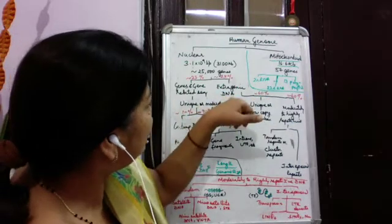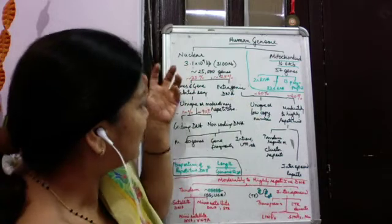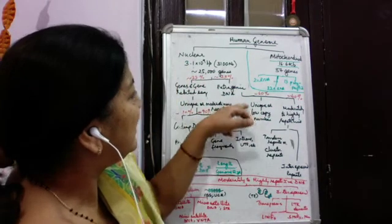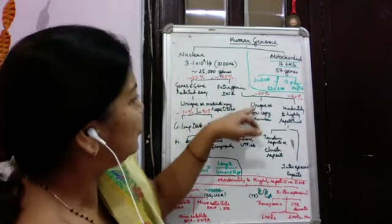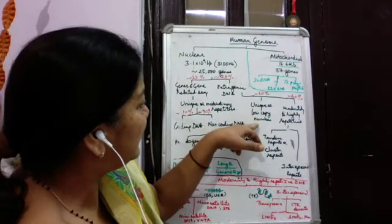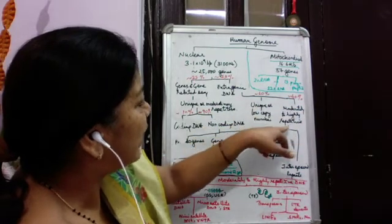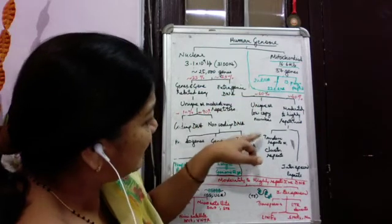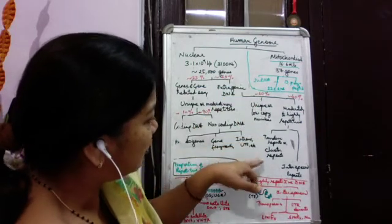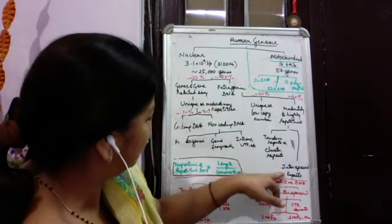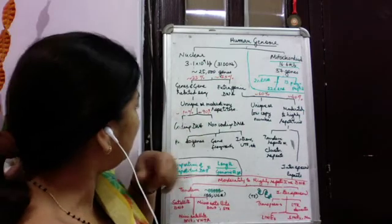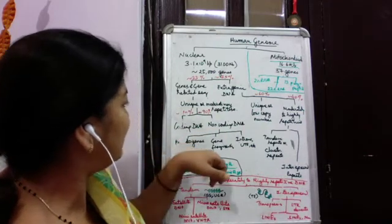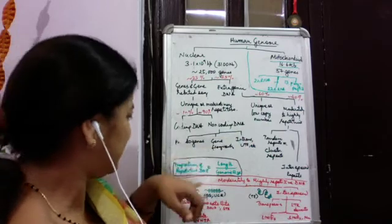The extragenic DNA, which is not coding for any protein or RNA, can be divided into unique or low copy number sequences and moderately to highly repetitive DNA. The highly repetitive DNA will have tandem repeats, cluster repeats, or interspersed repeats. The non-coding DNA includes pseudogenes, gene fragments, introns, and UTRs.